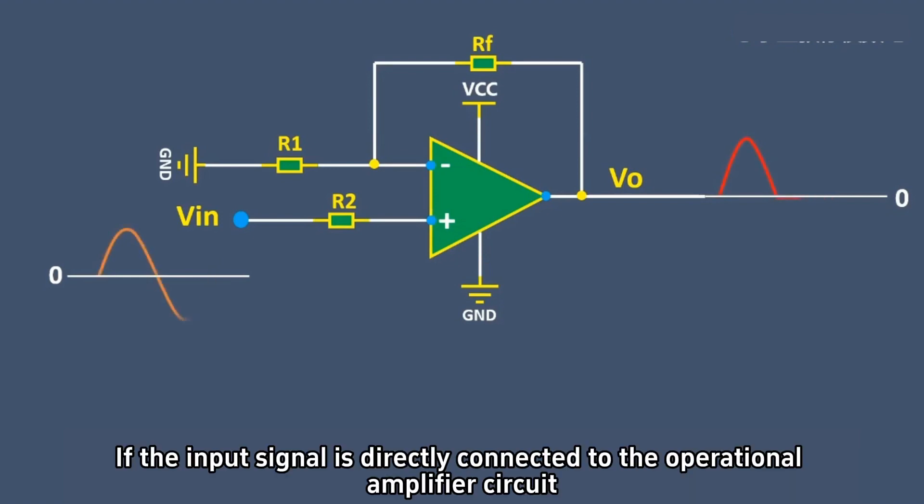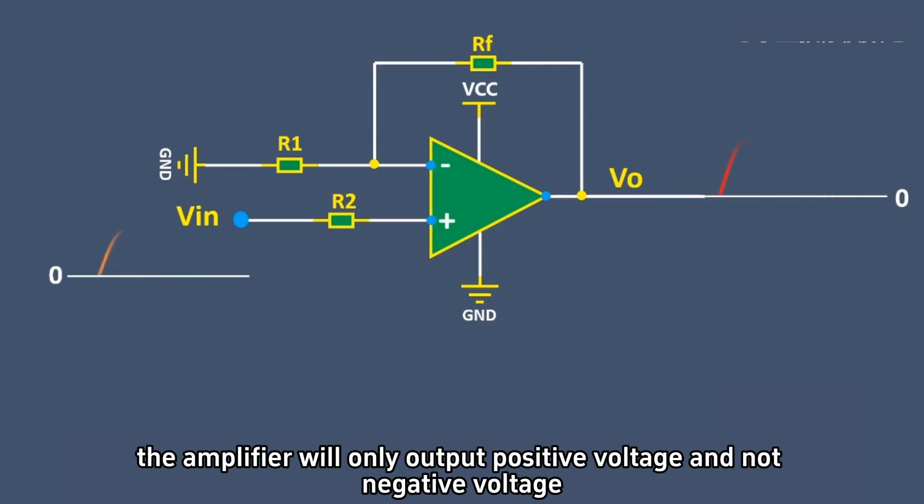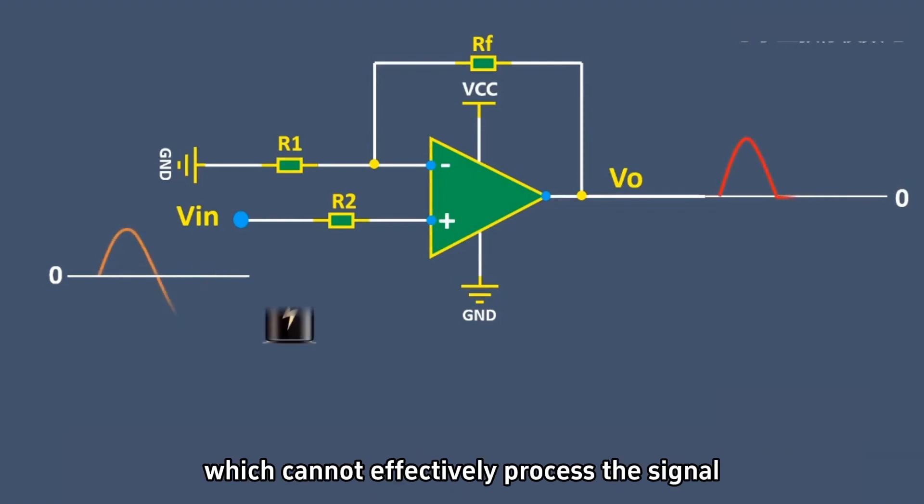If the input signal is directly connected to the operational amplifier circuit, the amplifier will only output positive voltage and not negative voltage, which cannot effectively process the signal.